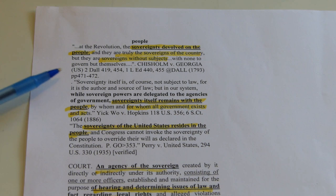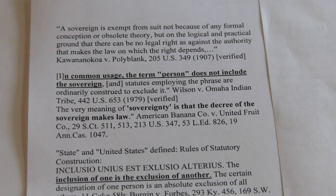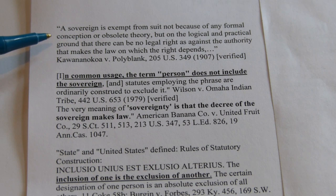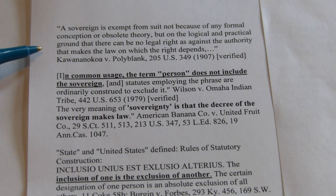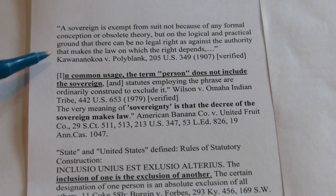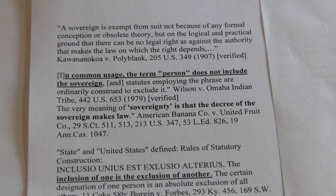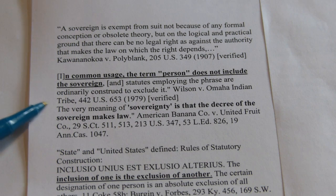Sovereignty itself is not subject to law, for it is the author and source of law — the king decreed the law and could not be bound by it. A sovereign is exempt from suit, not because of any formal conception, but on the logical ground that there can be no legal right against the authority that makes the law on which the right depends. U.S. Supreme Court, 205 U.S. 349, 1907. In common usage, the term 'person' does not include the sovereign, and statutes employing the phrase are ordinarily construed to exclude it. Wilson v. Omaha Indian Tribe, 442 U.S. 653, 1979. The very meaning of sovereignty is that the decree of the sovereign makes law. American Banana Company v. United Fruit.